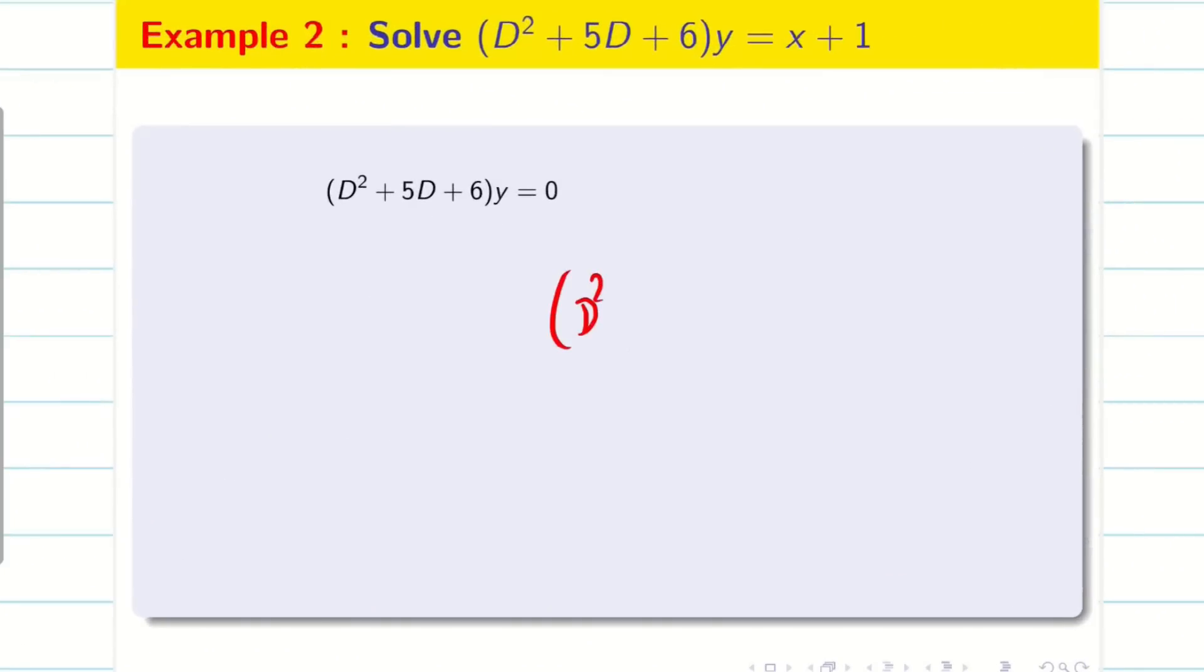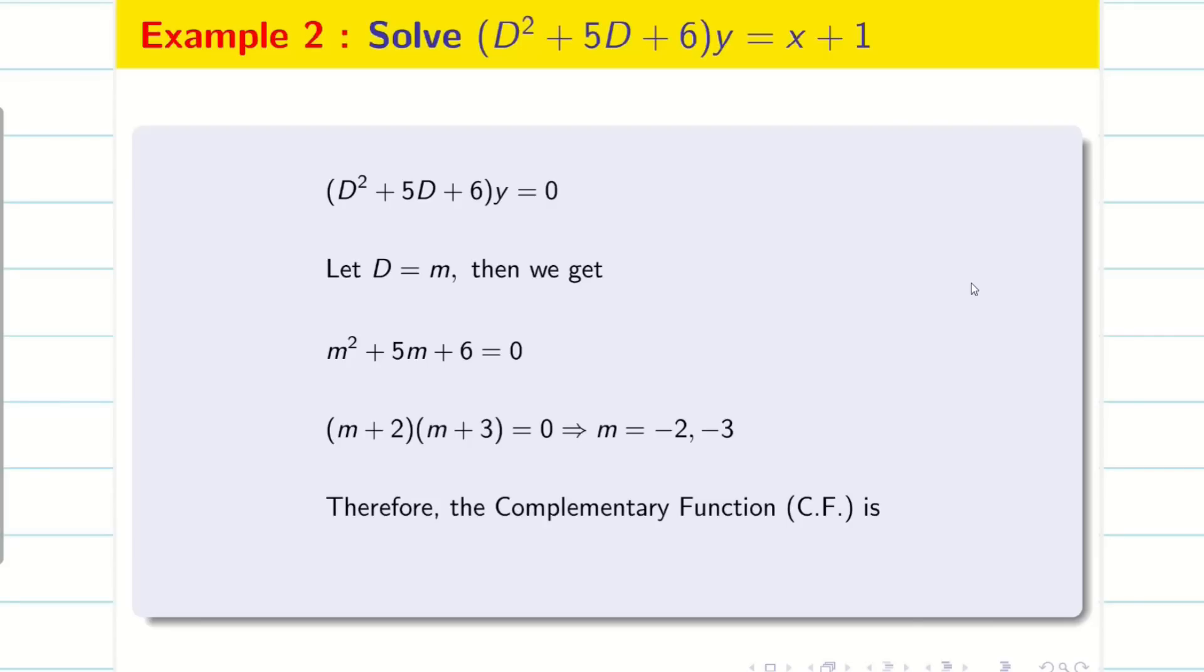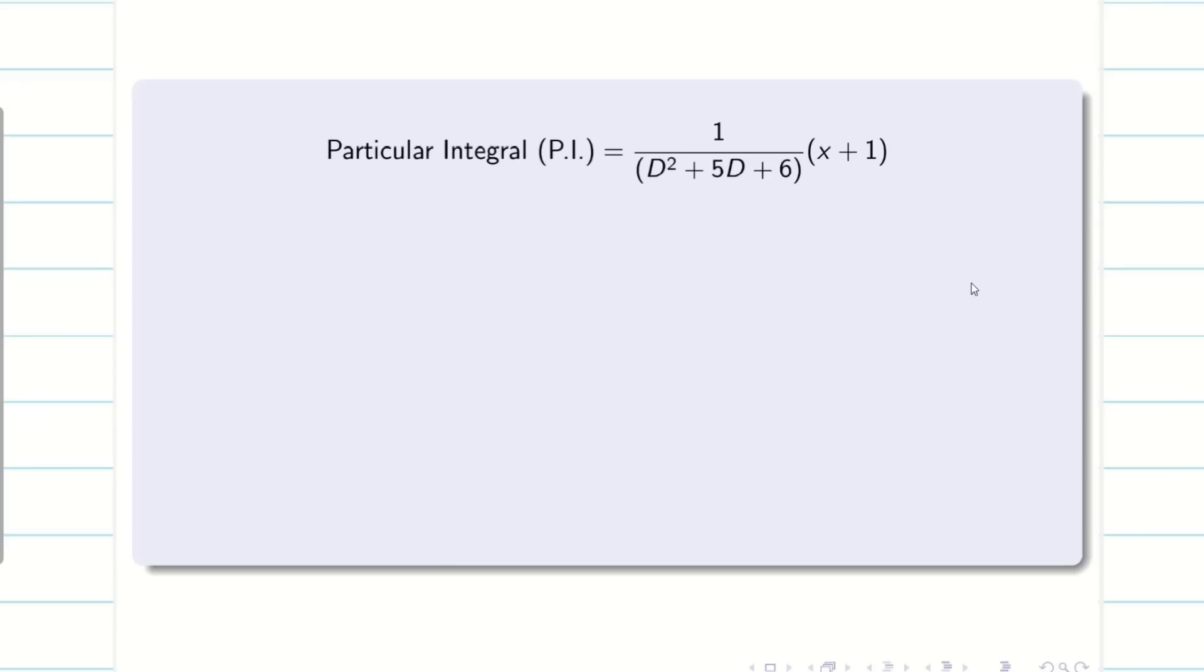Next problem: d square plus 5d plus 6 into y is equal to x plus 1. First, we have to find the complementary function. Let us assume d equal to m. The auxiliary equation is going to be m square plus 5m plus 6 equal to 0. Obviously, the roots are minus 2 and minus 3. Therefore, my CF is going to be a times e power minus 2x plus b times e power minus 3x. So, CF gets over.